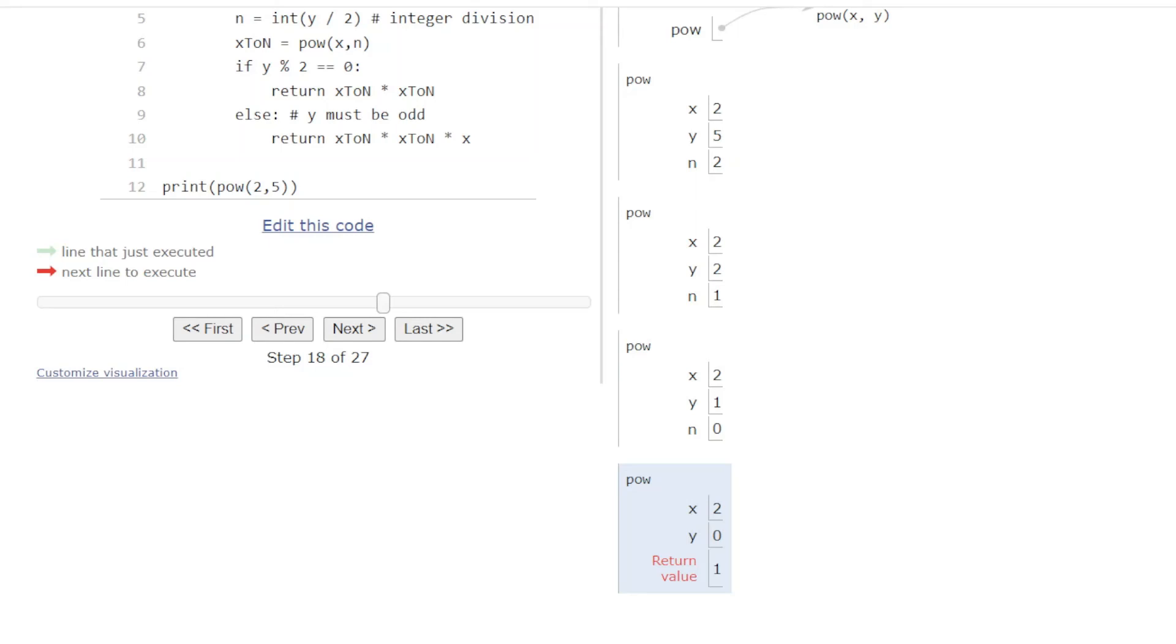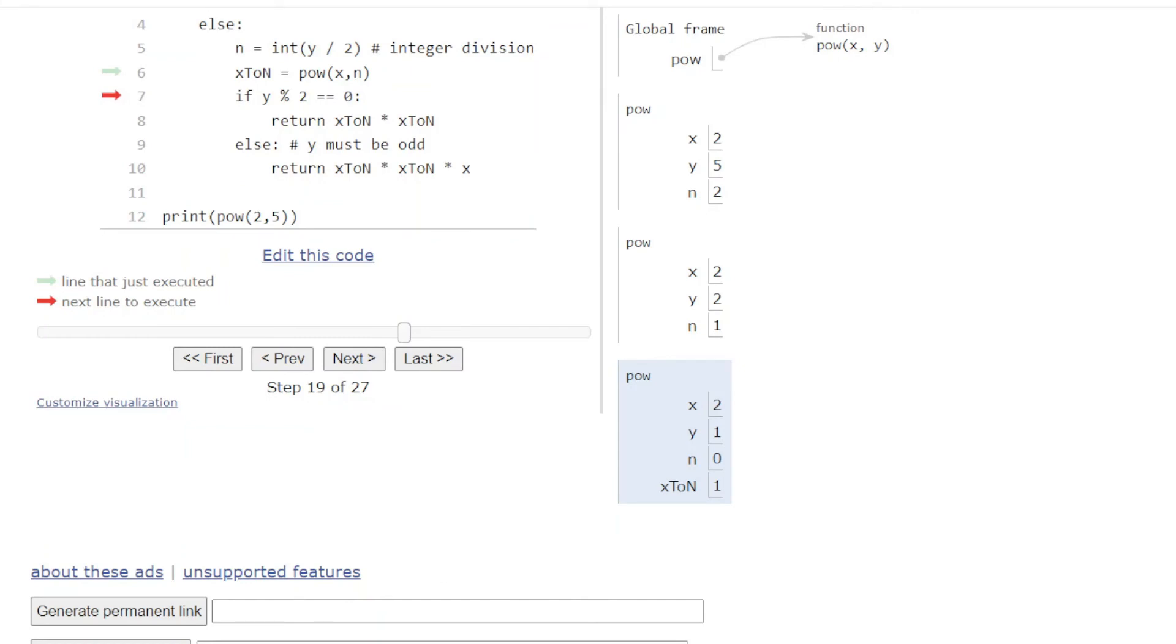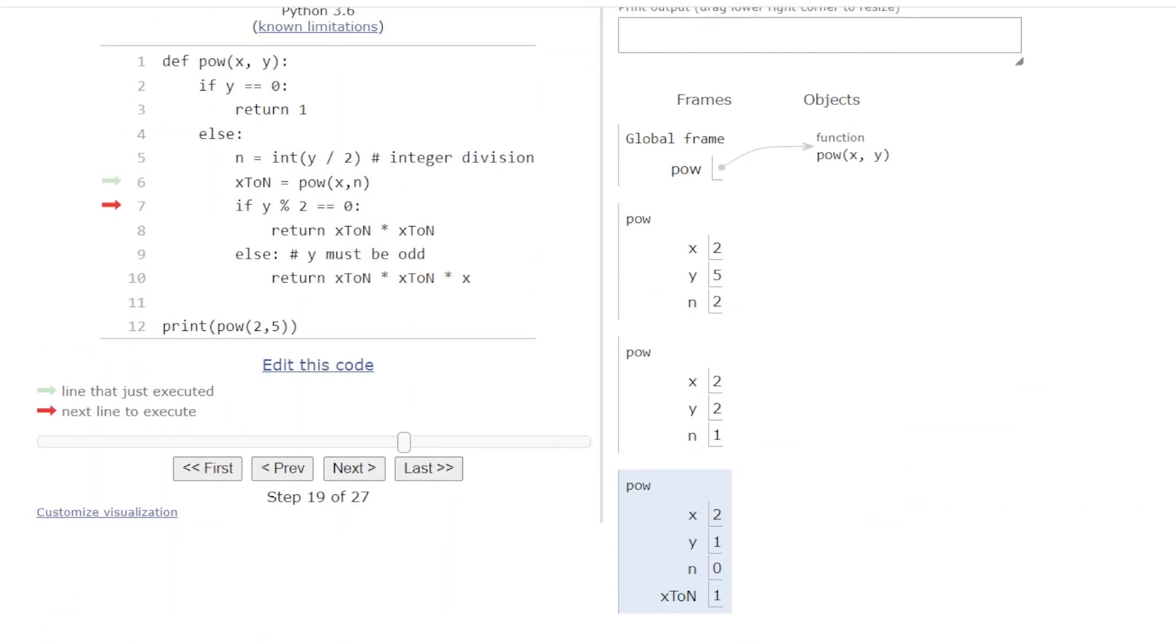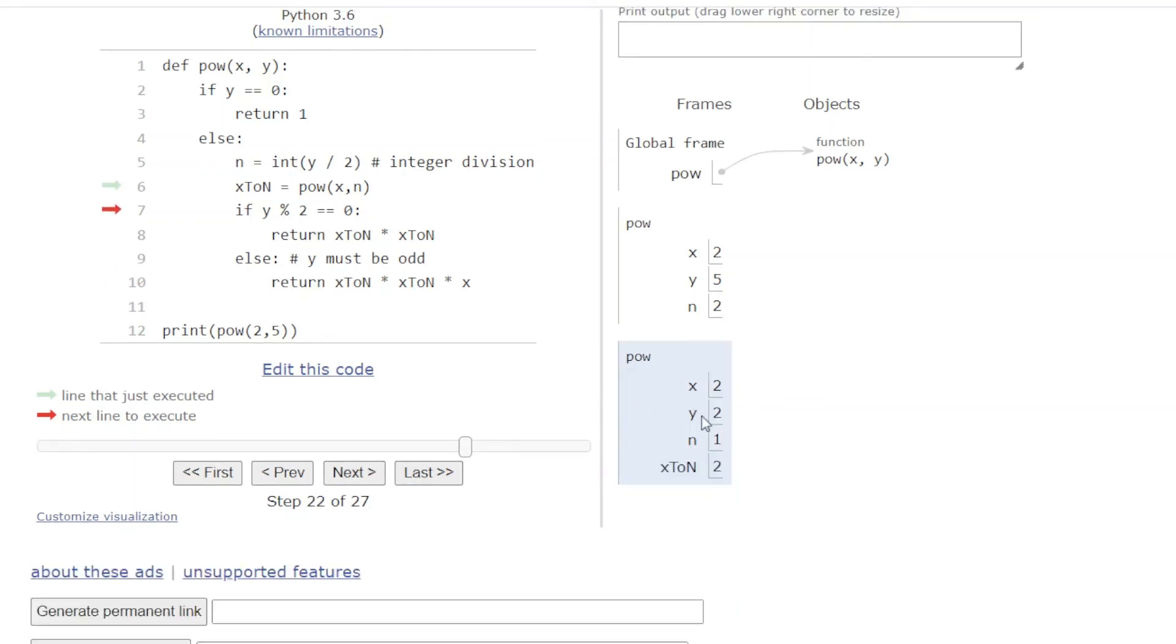And you'll see in the code that we were assigning the value of that recursive call to a variable, a new variable called x_to_n. So I will click next, and we see that that frame went away, but the previous frame now has x_to_n equal to 1. And so now we can step through the code from that point. We check to see if y is even, that's what the check here is, it is not. So we'll be in the else case where we'll be returning x_to_n times x_to_n times x, and so that is the return value you see here. That's 2, so that's 1 times 1 times 2, so a value of 2. And then we'll go next, that frame goes away, and the value 2 is stored in x_to_n within the previous frame.